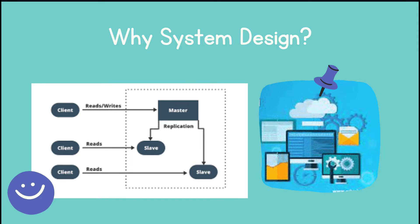Now, as technology moves faster and more applications come online, you need to think about how they might have been designed. It's not possible to fit everything on one system. The question becomes: how do we distribute the system? For something like Amazon, it has to be distributed. How do we make it available and consistent? How do we scale? How many systems should we use and how do they interact with each other?